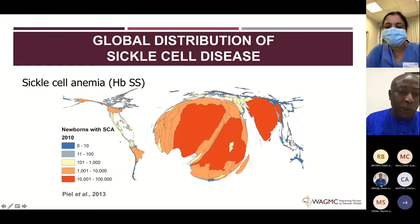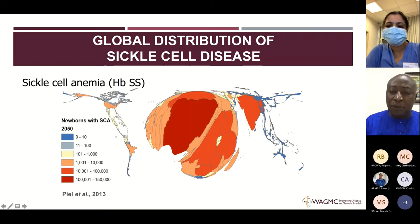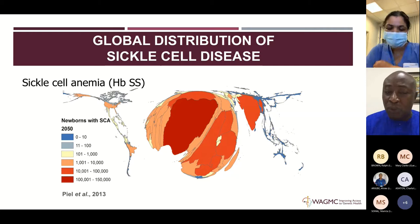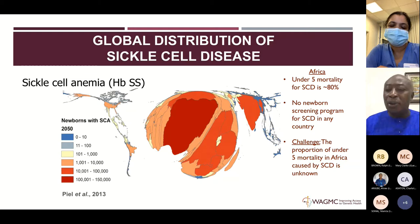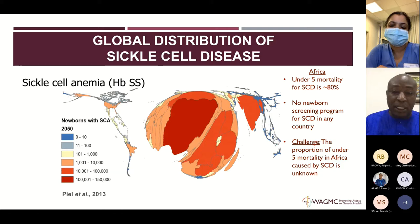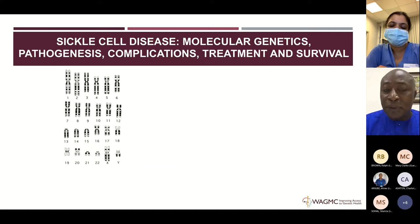These are the estimates for 2010. The estimates for 2050, when Nigeria becomes the third or fifth largest country in terms of population, show we will still have large numbers of babies born with sickle cell anemia — and this slide is only showing homozygous SS, not SC or S-beta thalassemia. We don't know the exact proportion of under-five mortality due to sickle cell disease in this part of the world because there are no newborn screening programs, so the proportion of under-five mortality caused by sickle cell disease remains unknown.